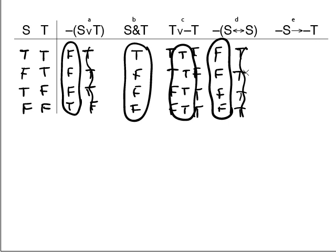Finally, dash S arrow dash T. Okay, so this one's slightly more complicated. For dash S, let's put in false, true, false, true—the opposite of the S column. For dash T, let's put in the opposite of the T column, which would give us false, false, true, true.